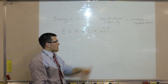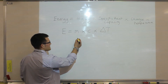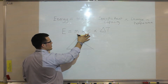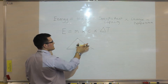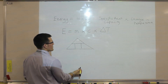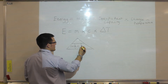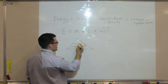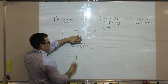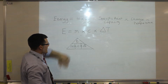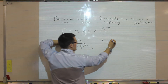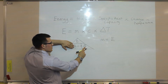We can still put this into a triangle — we just add extra space at the bottom. Since multiplied quantities go at the bottom, we divide the bottom of the triangle into three sections: mass, specific heat capacity c, and change in temperature delta T, with energy at the top. Covering mass gives mass equal to energy divided by specific heat capacity multiplied by the change in temperature.